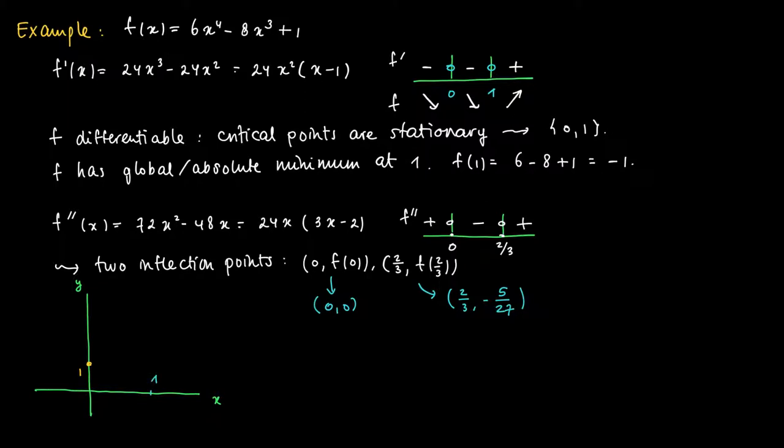At 1, we have a minimum, a global minimum, also with a horizontal tangent line. The function looks like this.